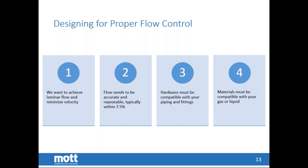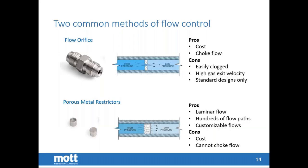When required, we can significantly improve beyond that 7.5%. A typical customer inquiry is whether to replace an orifice with a porous restrictor. The most common benefits of a single-hole orifice are cost — it's not technically challenging to manufacture, making it a low-cost, commoditized, off-the-shelf product. Additionally, the single stream through the orifice provides choking of the flow.